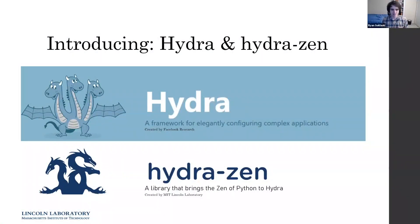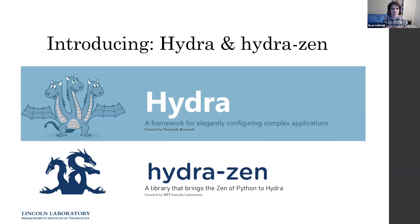Hydra is a framework developed by Facebook Research used to configure elegantly configured applications. It's growing in popularity, especially among machine learning researchers, because it helps you design and configure projects like machine learning experiments. Hydra Zen is an open source library developed at MIT Lincoln Laboratory which helps add the Zen of Python to using Hydra, providing Python-centric functions and rich new features on top of the baseline Hydra framework.